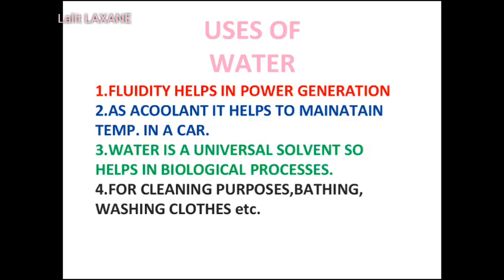Uses of water according to its properties: Water is useful for water transport due to its fluidity. Water falling down from a height is used to generate electricity with the help of a generator. Water is a good coolant and is used in motor vehicles to control the temperature of the engine. Water is used as a solvent in factories, laboratories, foodstuffs, and in various types of biological processes occurring in the body such as digestion and excretion. Water is also useful for cleaning purposes such as bathing or washing clothes.